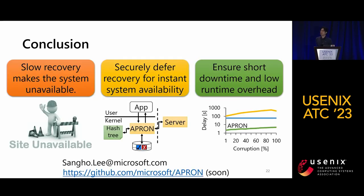Let me summarize and conclude. Existing recovery mechanisms are slow, making the system unavailable for a long time until fully recovered. APRON tries to overcome this by deferring recovery to ensure immediate system availability. APRON ensures short system downtime for recovery while maintaining low runtime overhead, even as it recovers the system during everyday workloads. Thank you for listening, and I'm happy to take any questions.